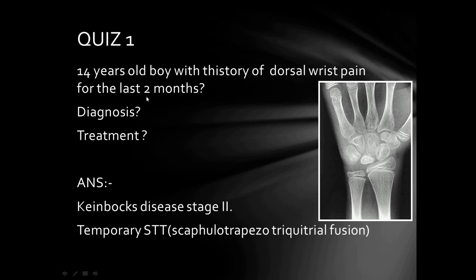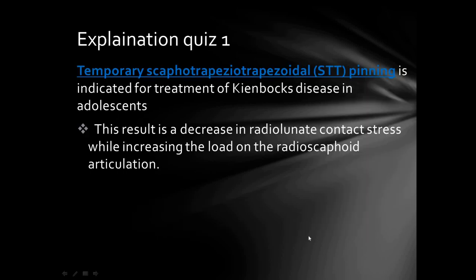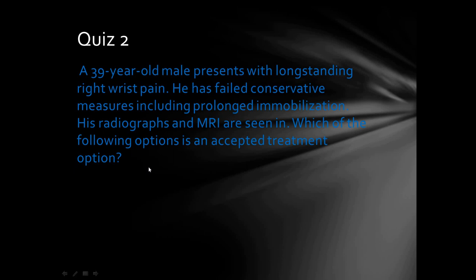Quiz: A 14-year-old boy with a history of dorsal wrist pain for two months — what is the diagnosis and treatment? On X-ray, sclerosis of the lunate is seen with no fusion of the growth plates. In this adolescent case, temporary scapho-trapezio-trapezoidal pinning is done. This is indicated in adolescents as it results in decreased radiolunate contact stress while increasing the load on the radioscaphoid articulation.